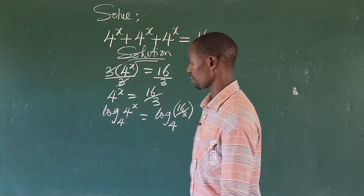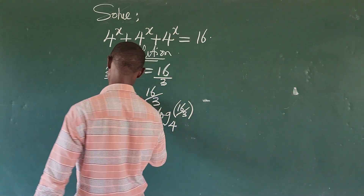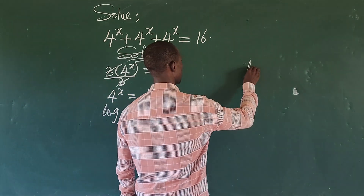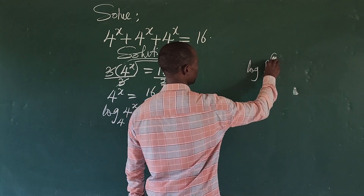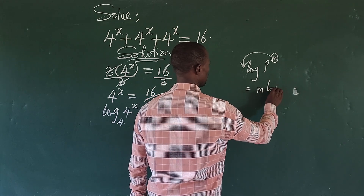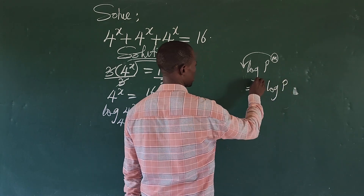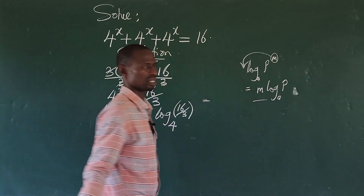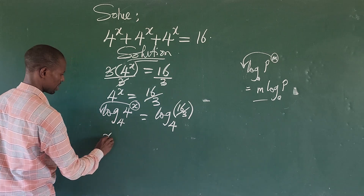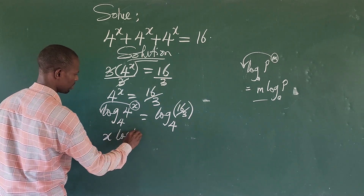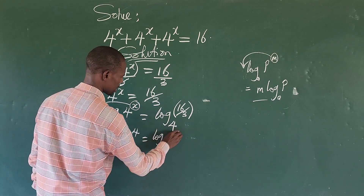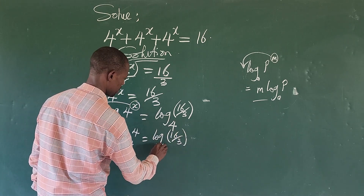We remember the law of logarithms — if you have log of p to the power of m, you can move the exponent to give us m times log p. So applying this, we have x times log base 4 of 4 equals log base 4 of 16 over 3.